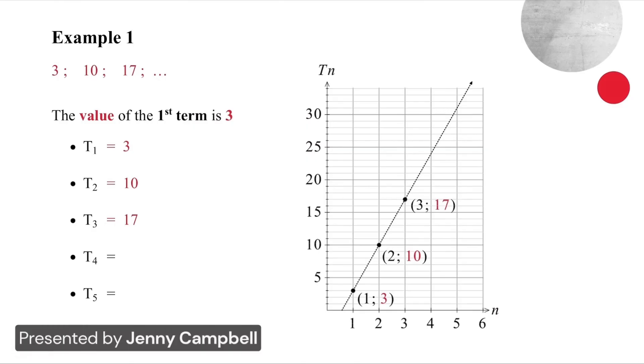Quick reminders, because this work is familiar to you from earlier grades. We're looking at the difference between the terms. So if we take the first two terms, the difference is seven. If we take the next two terms, the difference is still seven.